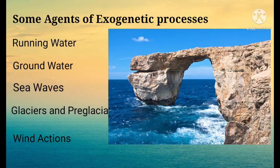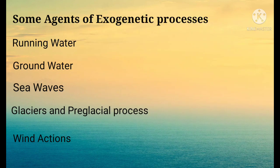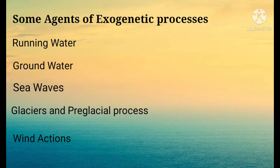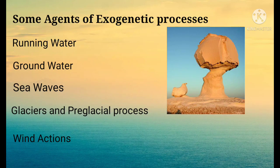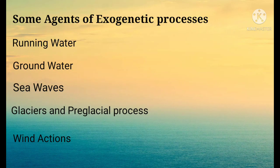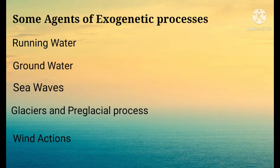The next agent is glaciers and periglacial processes — movement of glaciers also develops landforms on the surface of the earth. Lastly, wind action, especially in arid and semi-arid regions, carves out spectacular landforms like mushroom rocks, pedestal rocks, and yardangs. Apart from all this, weathering and mass wasting are also processes that develop different kinds of landforms.